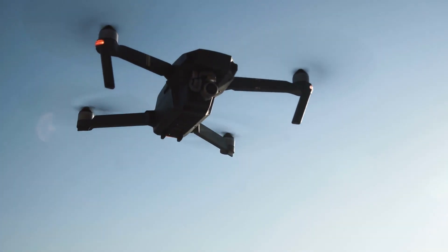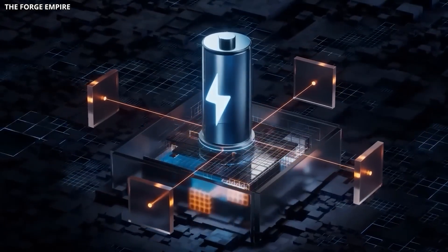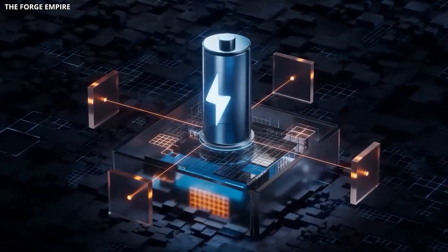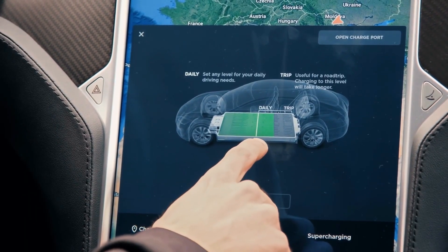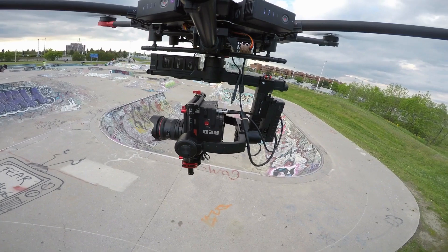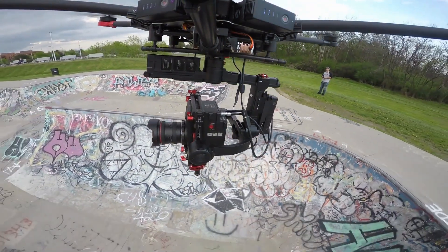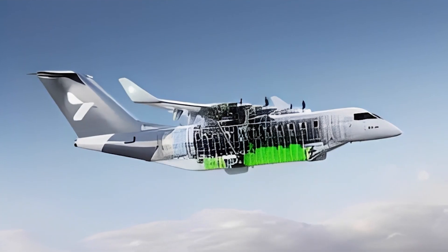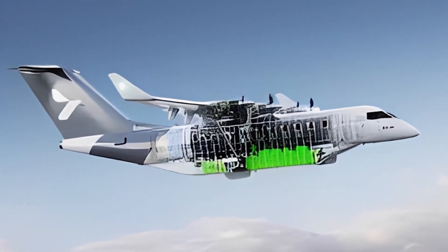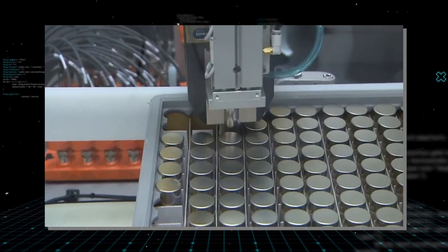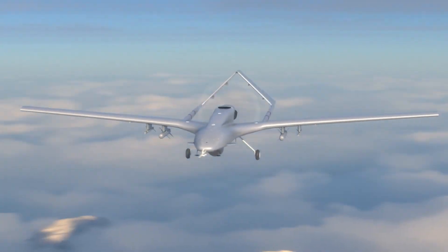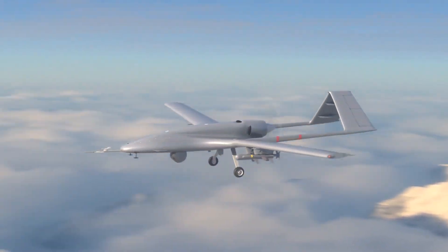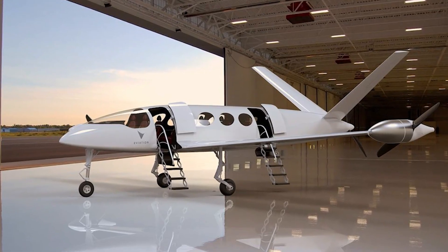Drones are another application. Delivery and logistics drones need batteries that are light, charge quickly, and last a long time. Graphene's high energy-to-weight ratio and fast charging fit those needs perfectly. A drone that can recharge in minutes between deliveries is far more useful than one that needs an hour. Aviation is exploring graphene batteries for electric aircraft. Weight is critical in flight, and every kilogram of battery weight reduces payload or range. Graphene's combination of high energy density and low weight could make electric planes more practical, though we're still years away from commercial electric aviation.